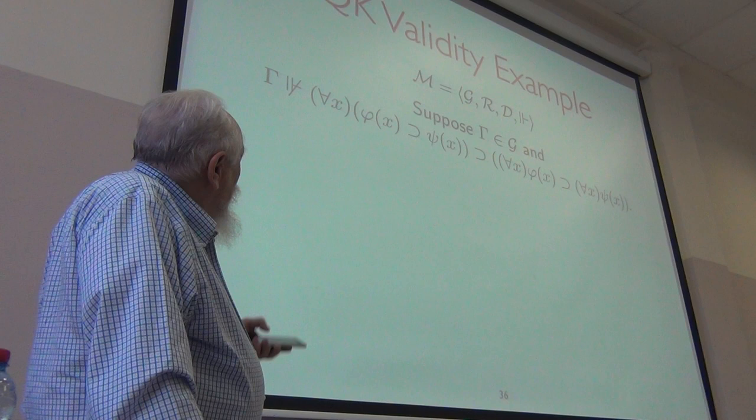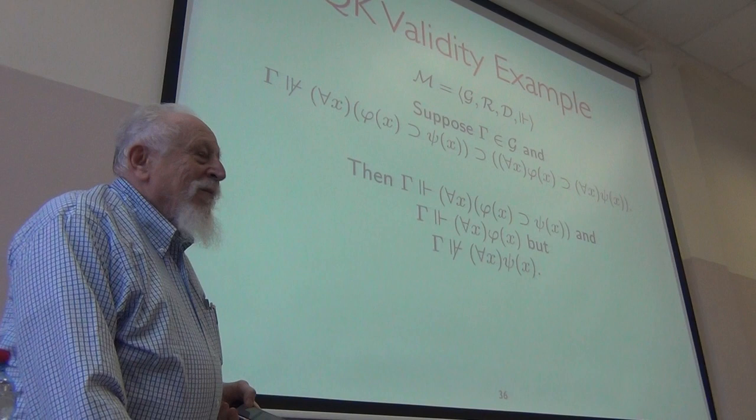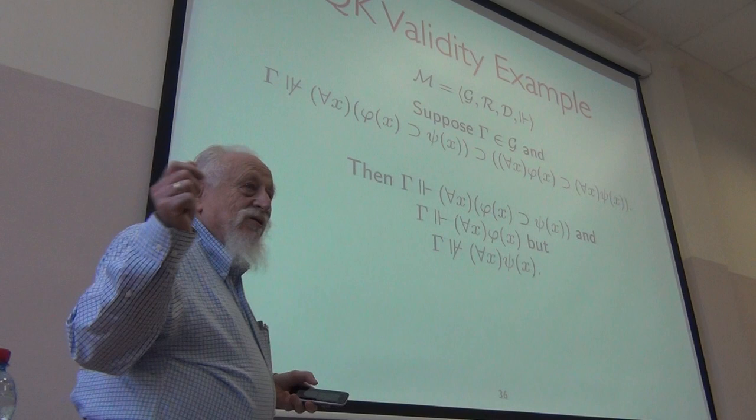Then the antecedent is true at gamma. This antecedent is true, but that consequent is false. Because this is false, there has to be an accessible world and something in that world that makes psi false there.